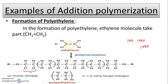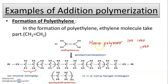In polyethylene, only one monomer - ethylene - is repeatedly added, meaning identical similar monomers are added. That is why polyethylene forms a homopolymer, since all monomers are identical. The structure formed is a linear chain structure - polyethylene has a linear chain structure.